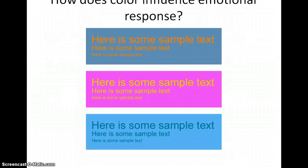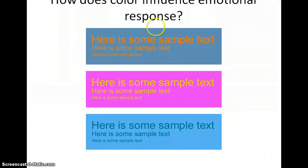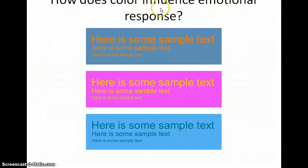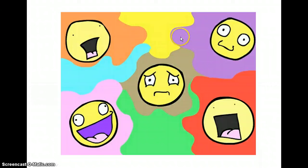How does color influence emotional responses? Looking at the examples here, the main thing it influences is the relationship between background and text. For example, in some of these you can barely read the text because of the background or text color combination. All three examples are still readable, but not as clearly as the questions at the top of the page. There's a really strong relationship between the text and the background.